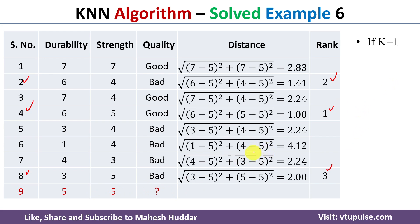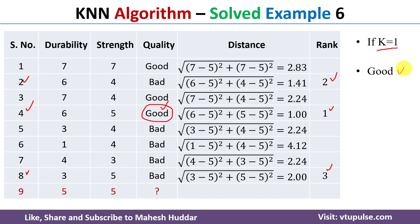Now we consider the value of k. When k=1, we consider only the first nearest neighbor and assign its label to the new example. The first nearest example is the fourth one, whose label is 'good'. Therefore, the new example is classified as 'good'.